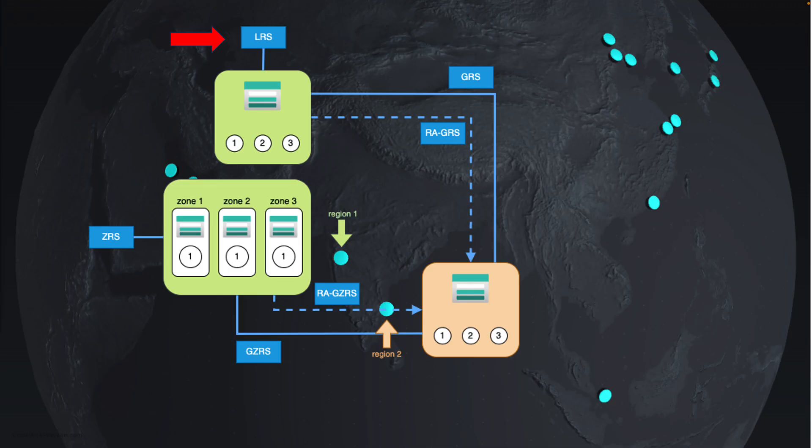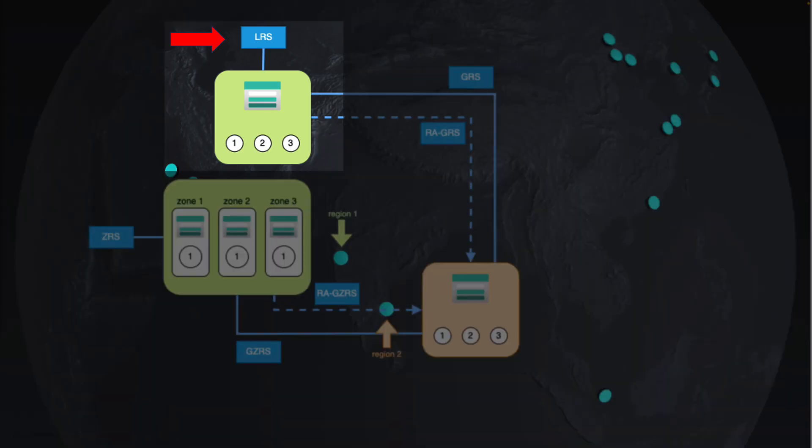In this image, you can see the Locally Redundant Storage containing a single storage account having the data copied three times. It is the simplest among all and doesn't have any dependency on any other region.